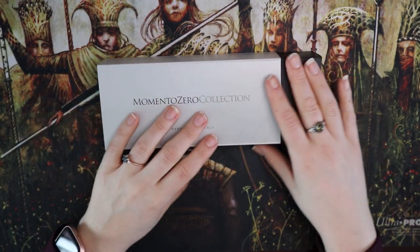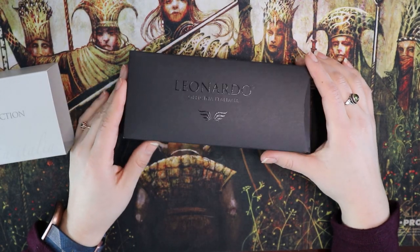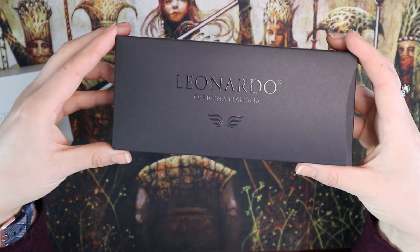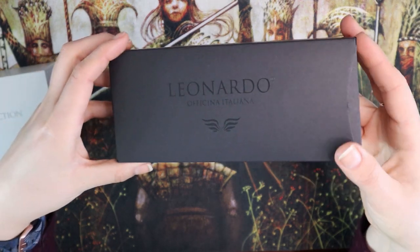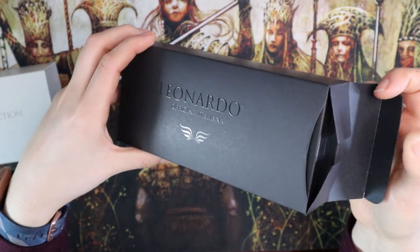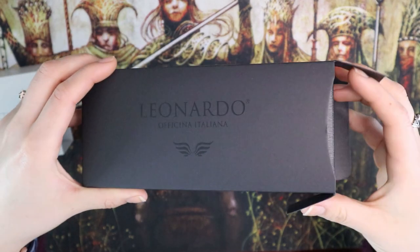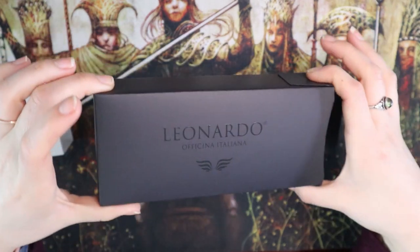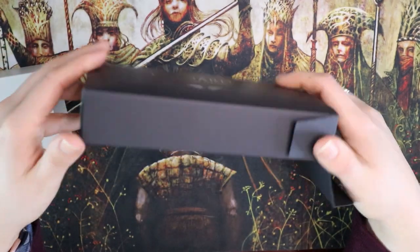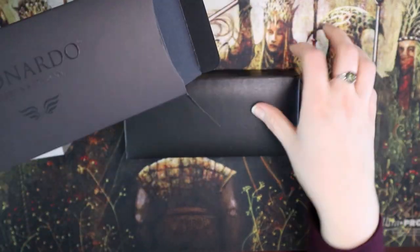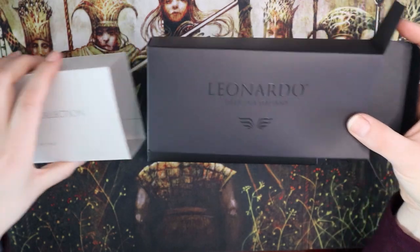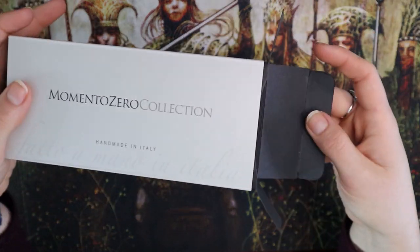However when you take this off there's a box and it says Leonardo Officina Italiana, I'm not good at Italian. Then turns out this is another sleeve. And then you come to the box. So it's like a double sleeved pen. Why? Why so much packing material?